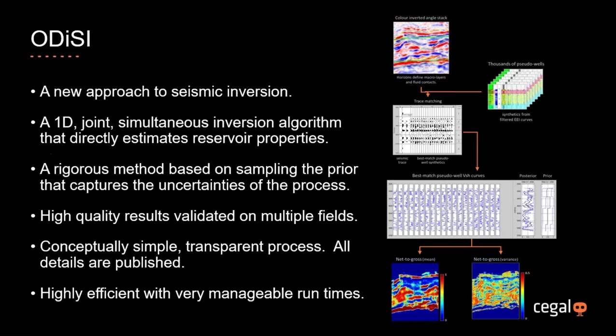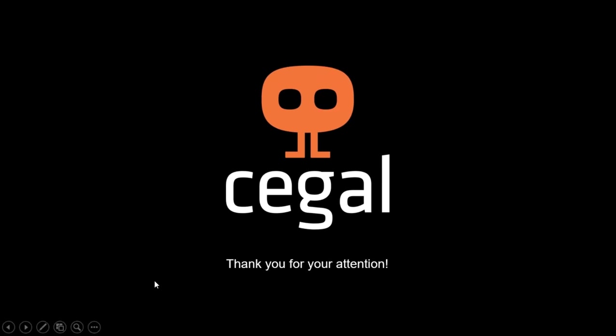In summary, Odyssey represents a new approach to seismic inversion. It's a 1D joint simultaneous inversion algorithm that directly estimates reservoir properties. It's a rigorous method based on sampling the prior that captures the uncertainties of the process. It produces high quality results validated on many fields. It's a conceptually simple, transparent process, all details published in the current edition of Geophysics, and the run times are very manageable. Thank you very much for your attention.